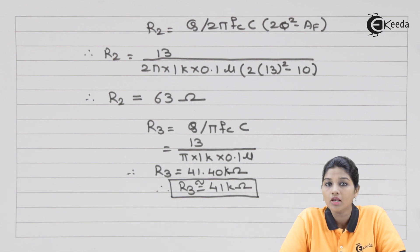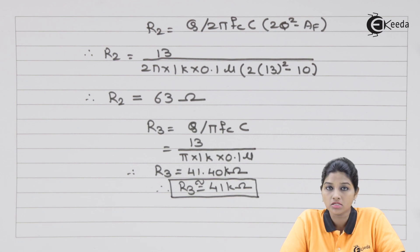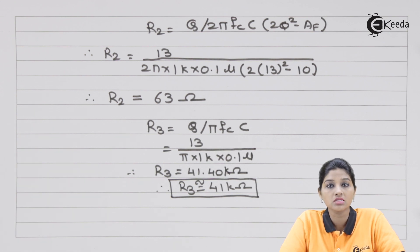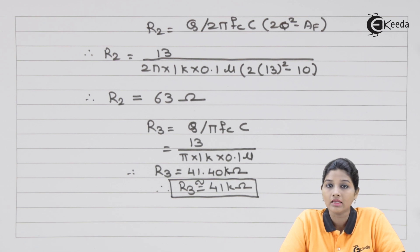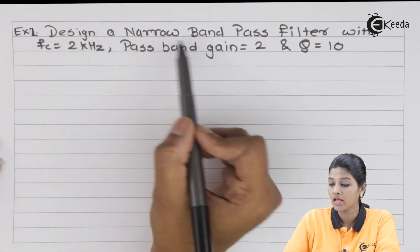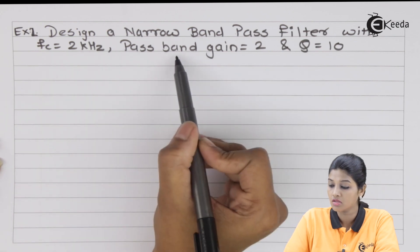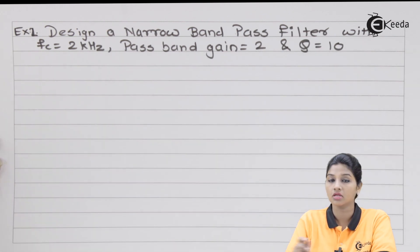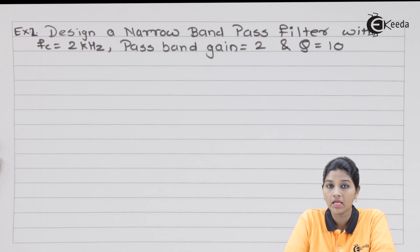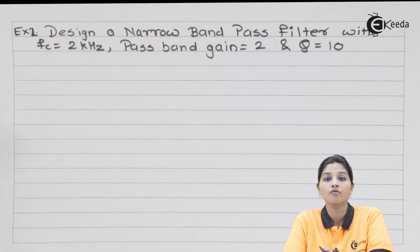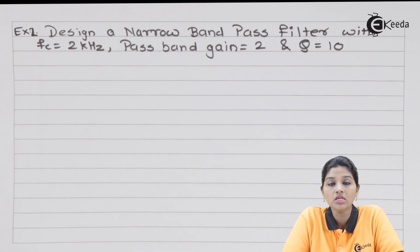Since the gain, capacitor value, and center frequency fc are all given in the problem, there is no need to follow any remaining steps. We only needed to calculate R1, R2, and R3. This is how we design a narrow band pass filter. Now for the second problem: design a narrow band pass filter with fc = 2 kHz, pass band gain Af = 2, and Q = 10. The Q value of 10 satisfies the condition Q ≥ 10.